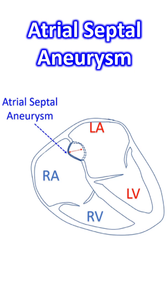Atrial septal aneurysm is also visible on transthoracic echocardiography, but visualization of PFO flow details may need transesophageal echocardiography, as it has better resolution and echo window.